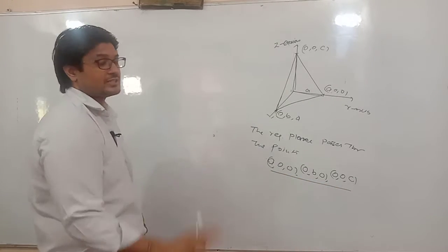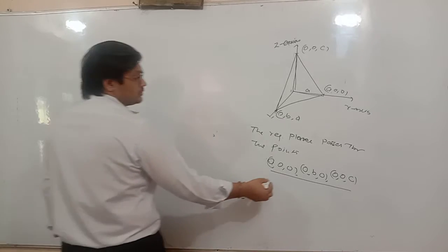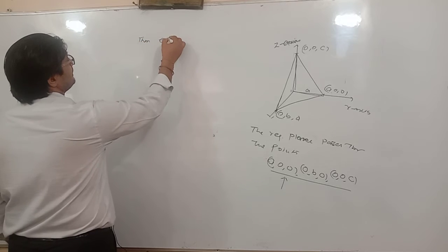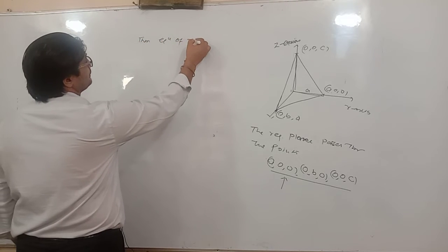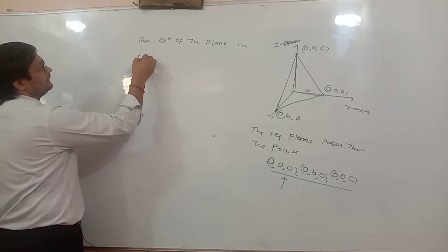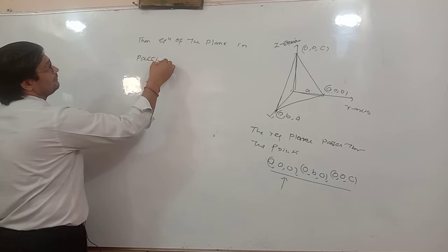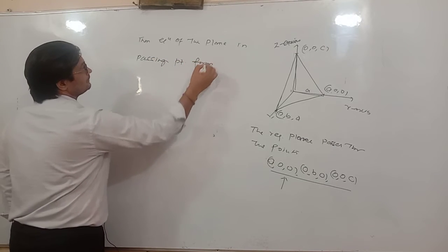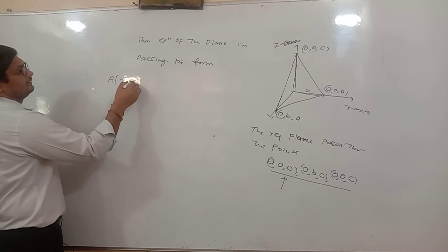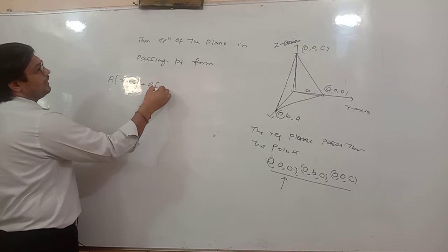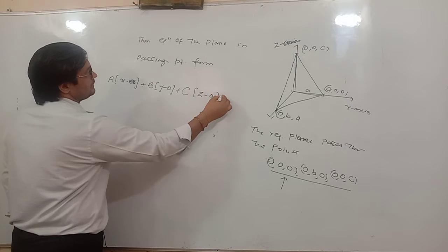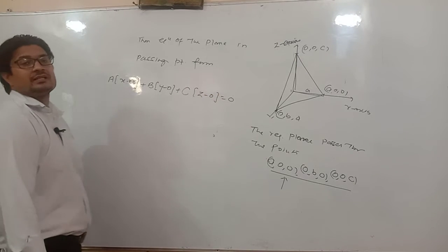Suppose this one is the passing point. Then the equation of the plane in passing-point form is: A into (x minus a) plus B into (y minus 0) plus C into (z minus 0) equals 0.